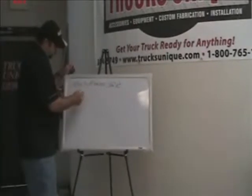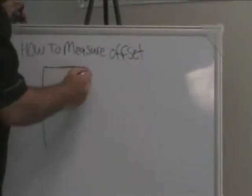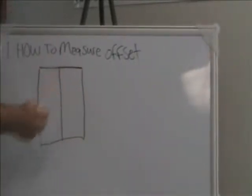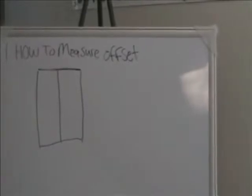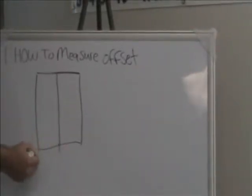So basically, offset, what it is, excuse my crude drawing, but basically what an offset is, let's just pretend this is a wheel. And then the center of the wheel, this is basically your mounting flange to where the wheel bolts up to the vehicle. Your offset is usually the distance from the mounting flange to the outside of the wheel. This is usually measured in millimeters.